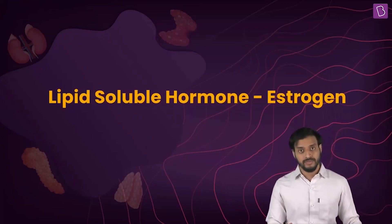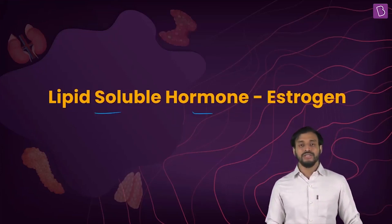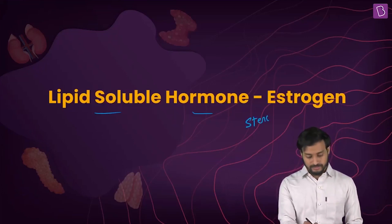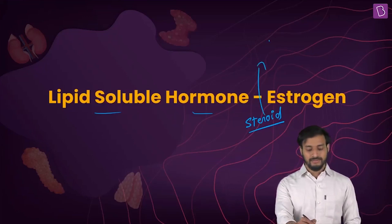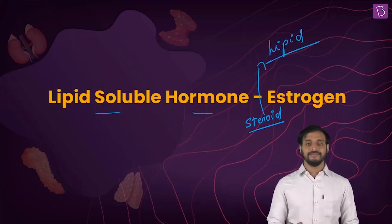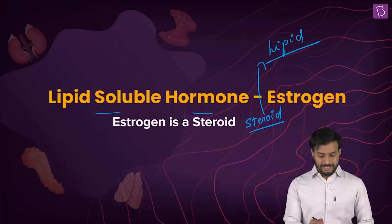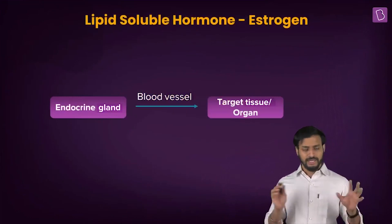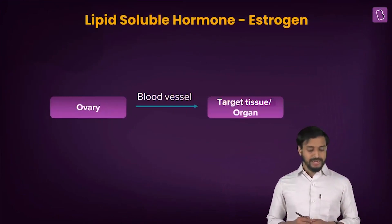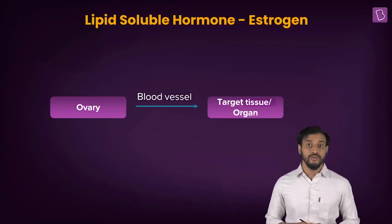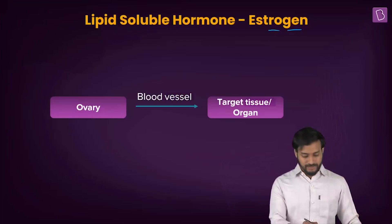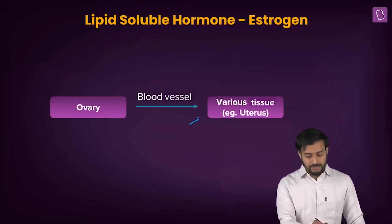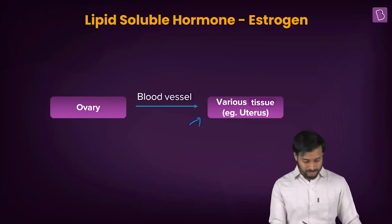Let's take the example of the lipid soluble hormone estrogen to help understand. Estrogen is a steroid hormone, and steroids are lipid soluble. The endocrine gland is the ovary, which secretes estrogen. It travels through the blood vessels and reaches the target tissue or organ — which is, for example, the uterus.